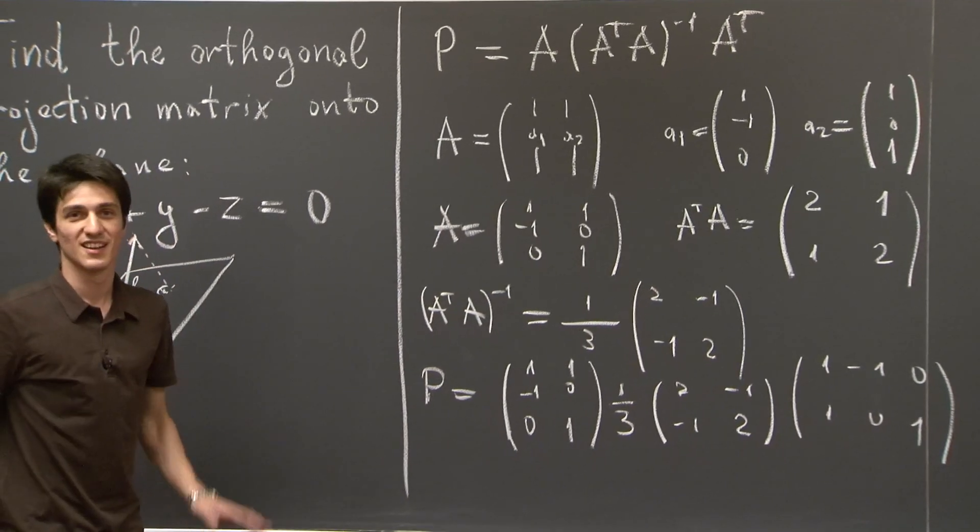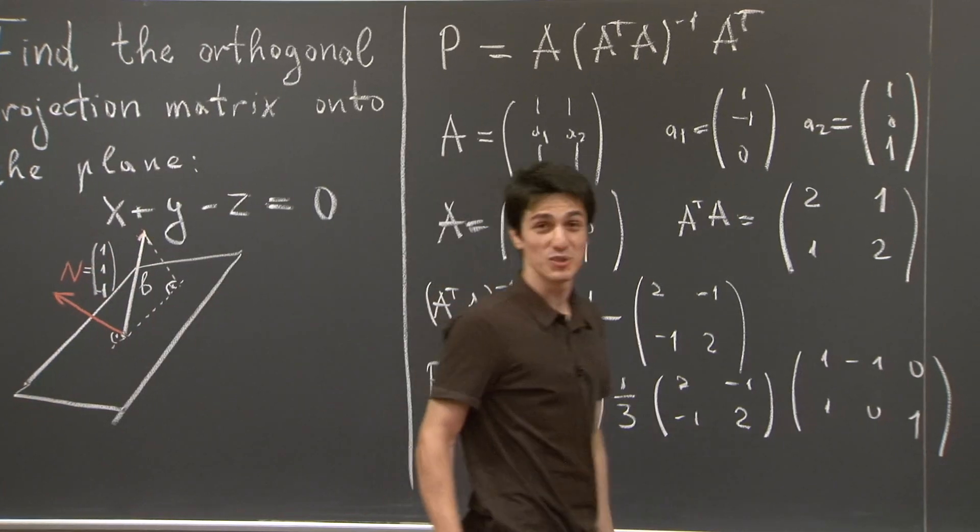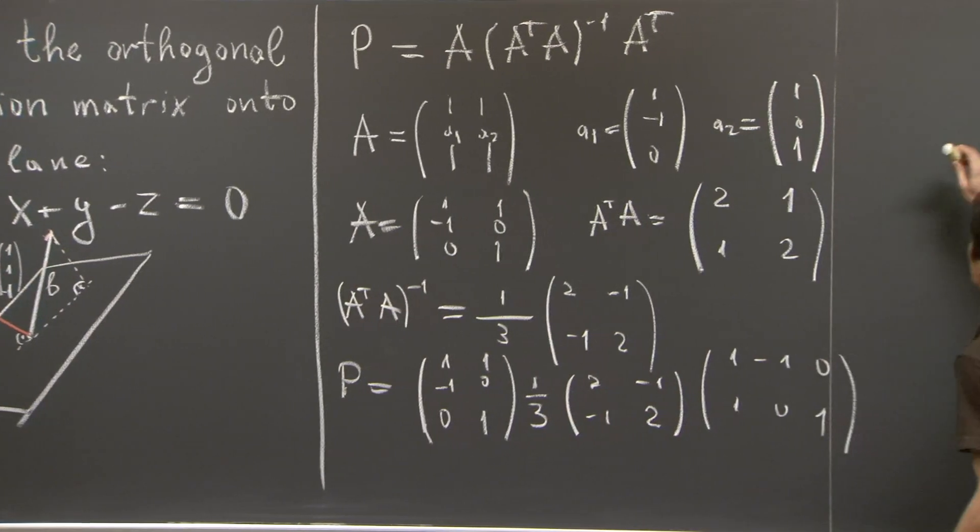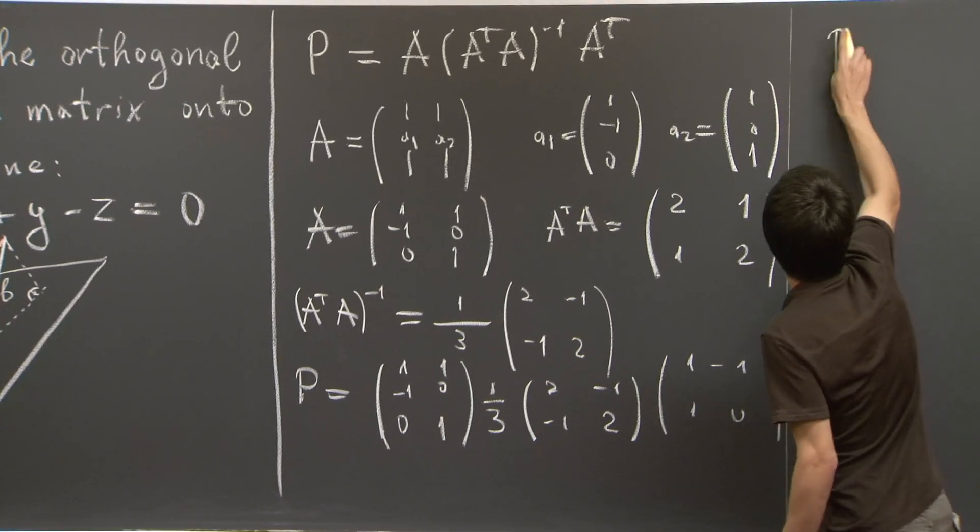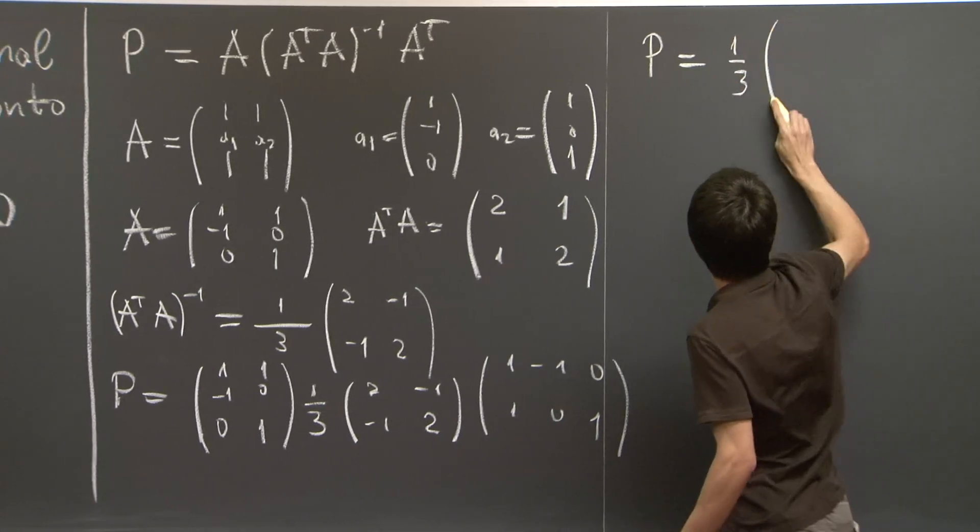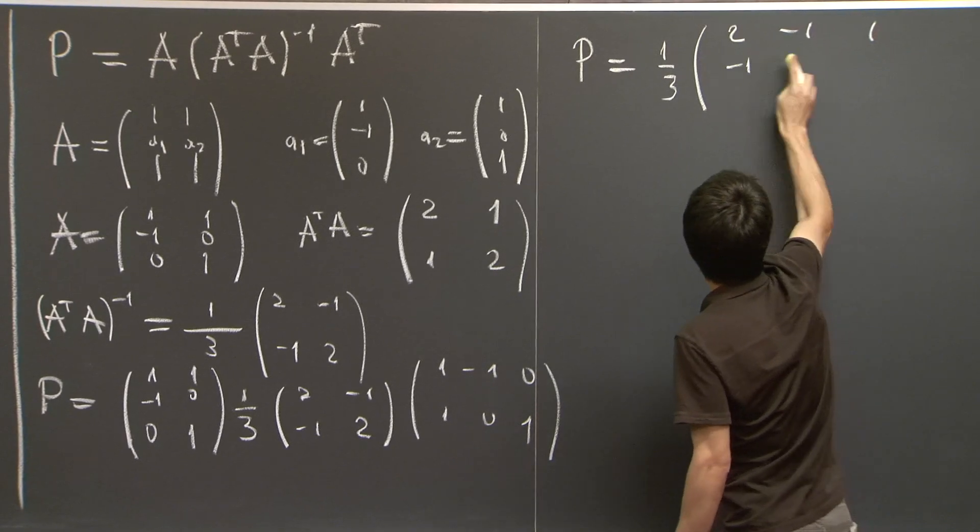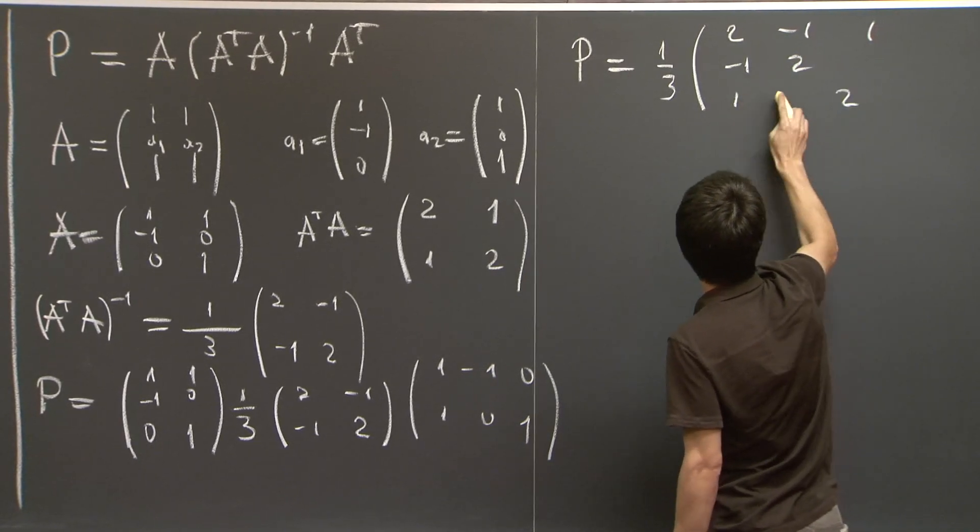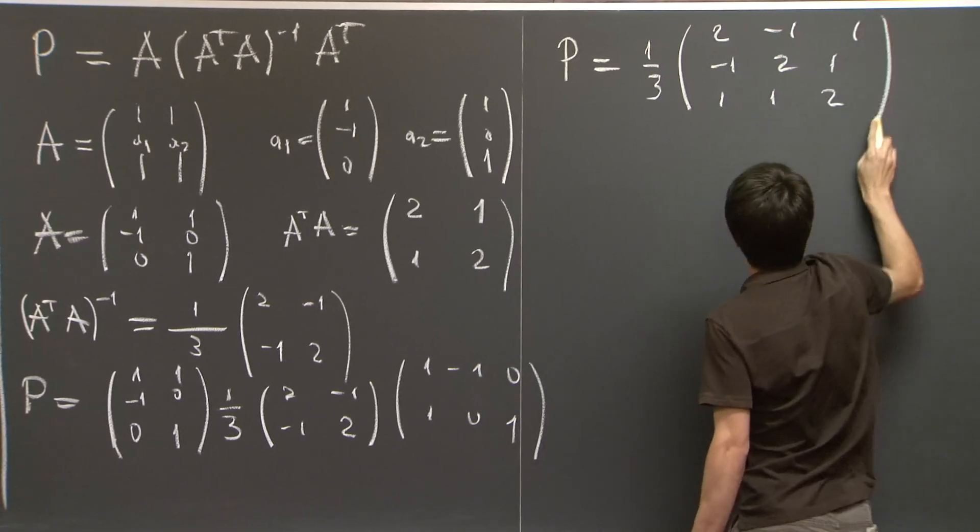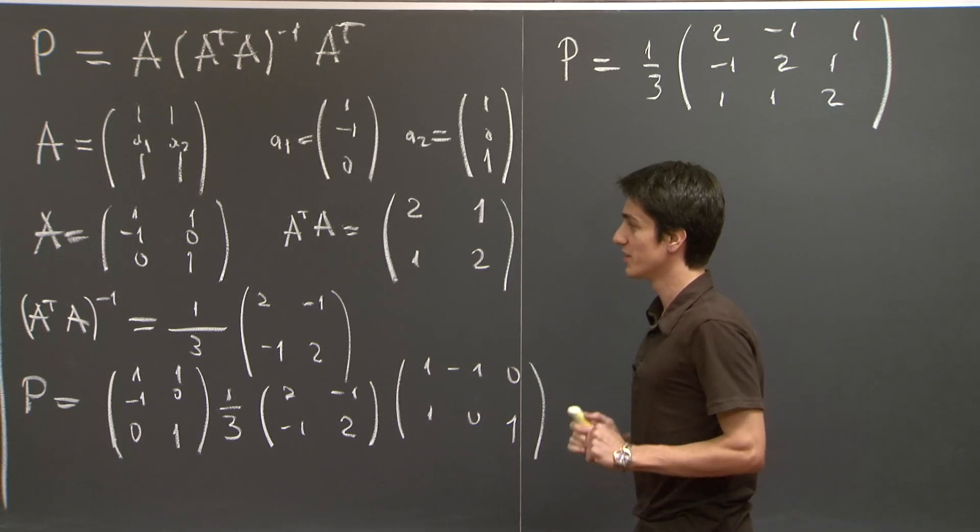OK. I'm going to carry out this multiplication in a humanly fast fashion. So I'm just going to write down the answer, which is 1/3, 2, negative 1, 1, negative 1, 2, 2, 1, 1, 1.